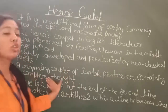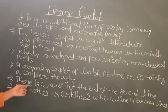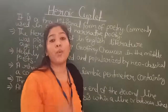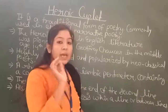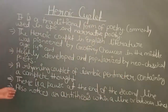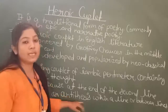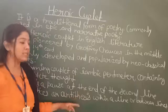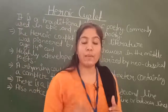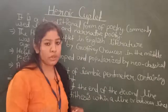A rhyming couplet of iambic pentameter containing a complete thought. Beyond that, in a heroic couplet there is a pause at the end of the second line — it feels like the statement is complete. Also, you will notice an antithesis within a line or between lines — meaning two opposite words, either within one line or between the upper and lower line. That is heroic couplet in very simple language.